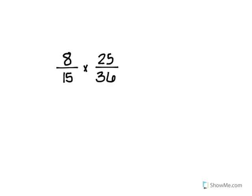What about 8 and 36? I could divide them both by 4 — 8 divided by 4 is 2, and 36 divided by 4 is 9. Now I notice 9 and 15 both have a factor of 3, but I can't simplify two denominators together — it has to be a numerator and a denominator. Looking at 25 and 15, they both have a factor of 5, so I can divide those.